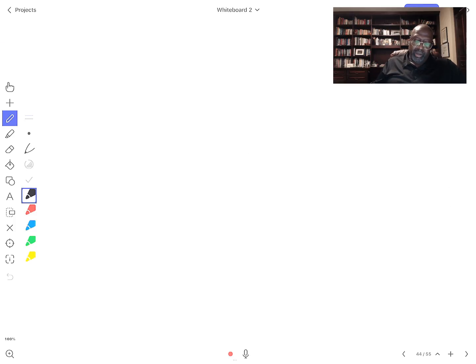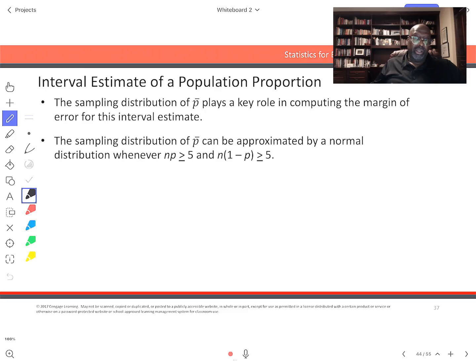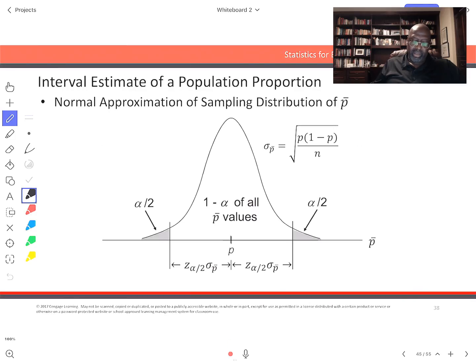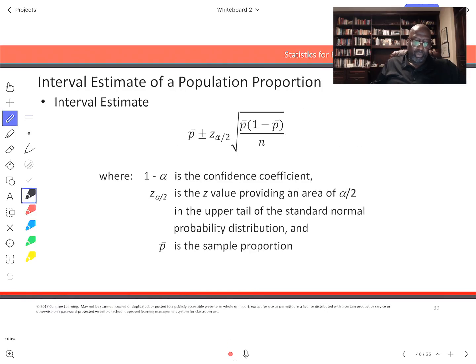So our formula should look like this. Here it is, interval estimate of population proportion: here's our point estimate, here's our critical value, here is our standard error, and together those two things give us the margin of error.